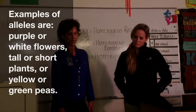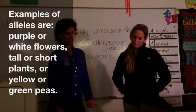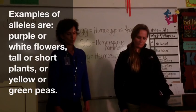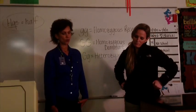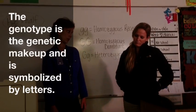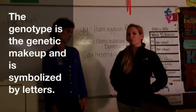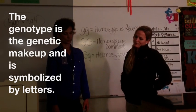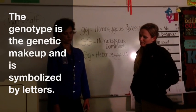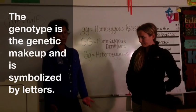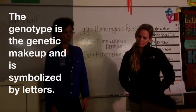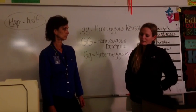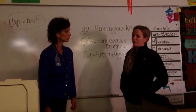So if the genotype is the genetic makeup and we can't really see it, how do we write it out to show it? We use letters to symbolize the genotype and to symbolize the variation of the gene that makes up an organism. So what letter would represent green or yellow pea plants? We can use any letter as long as it stays consistent and you're using a key.